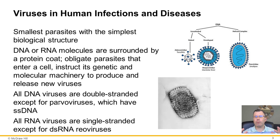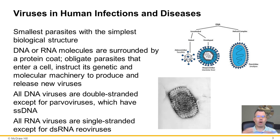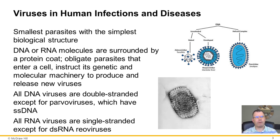Some of you may be familiar with parvovirus because it causes enteric disease in dogs and distemper in cats. There is a human infection as well — it's not extremely serious normally, but it can cause early miscarriage and fetal death. In young children it's usually not life-threatening; it may cause a rash, and it's called fifth disease.